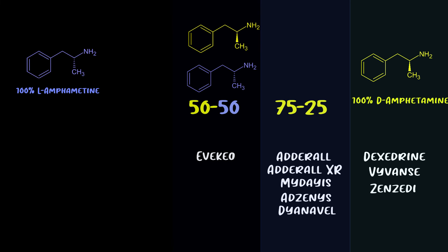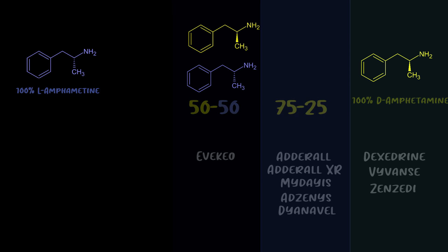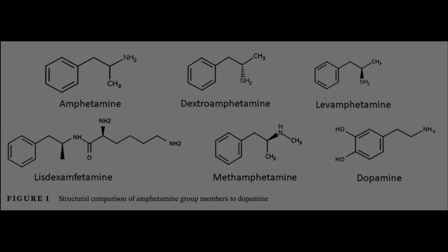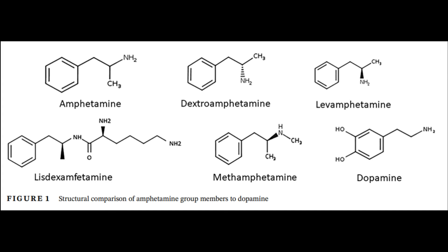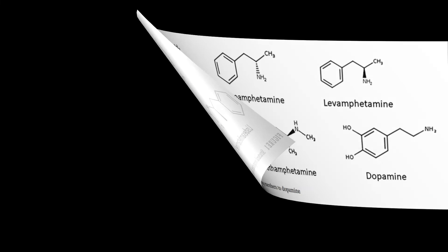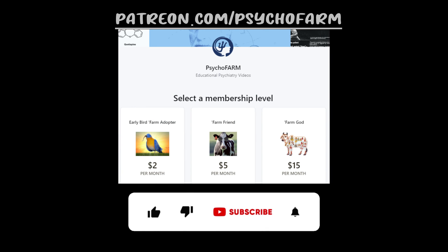There's also Zenzedi, which is just Dexedrine XR. As a fun fact, you can actually prescribe methamphetamine — Desoxyn is literally meth, though prescribing it takes some nerve. Looking at the chemistry structures, you can see how closely related dopamine is to amphetamine, and methamphetamine is literally just one methyl group (CH3) added to amphetamine. So when people call doctors drug pushers, it's understandable.